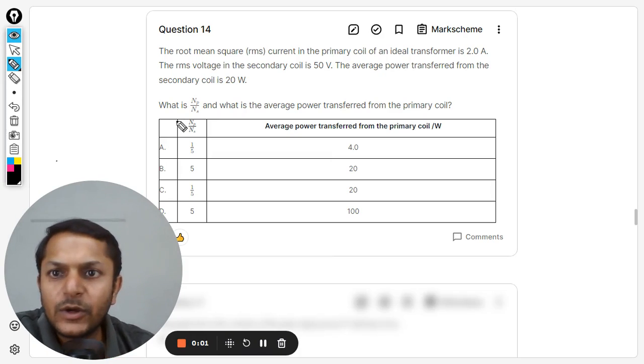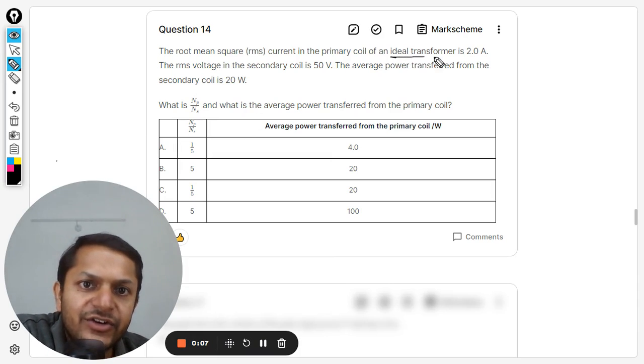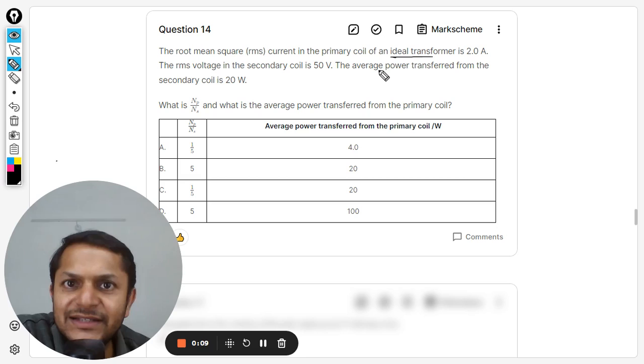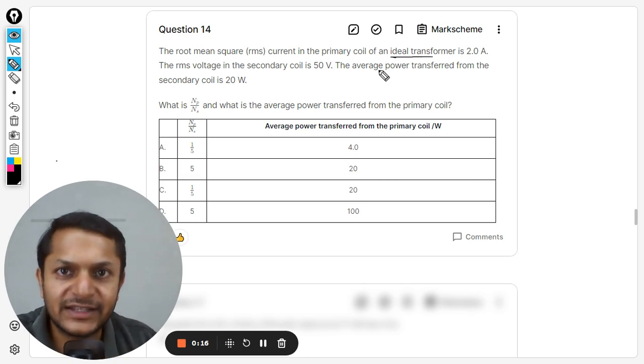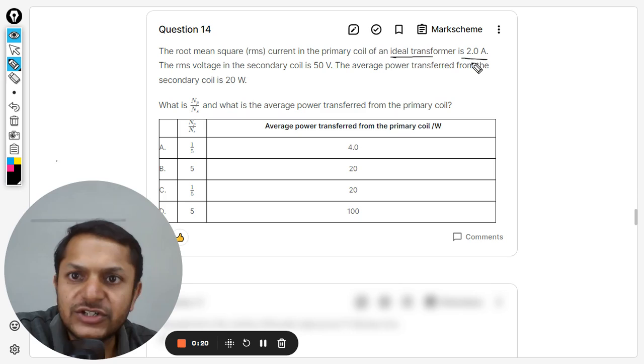Our curious students, let us see what is there in this question. The root mean square current in the primary coil of an ideal transformer—ideal transformer means that the efficiency is 100%, so the power input, that is v1 i1, will be equal to the power output at the secondary coil, that is v2 i2.